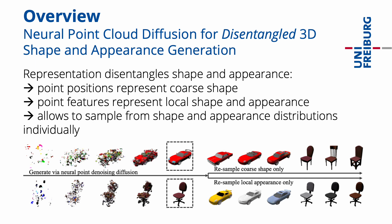The neural point cloud representation disentangles 3D shape and appearance, as the point positions represent the coarse shape, and the point features represent the local shape and appearance of the object. This allows sampling from the shape and appearance distributions separately. As shown in the figure, this can be used to resample only the coarse shape or only the local appearance of an object.